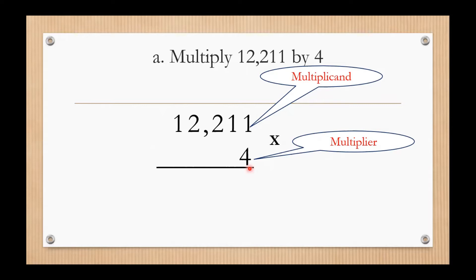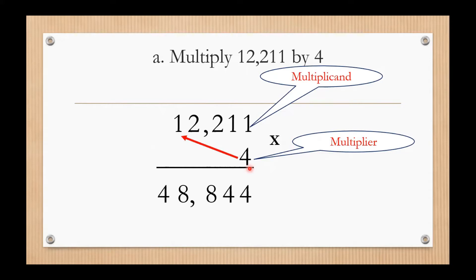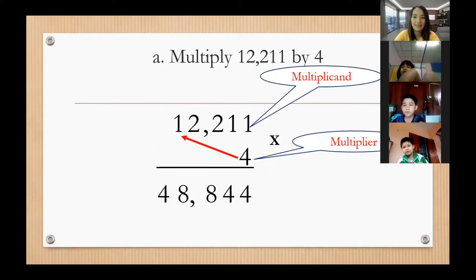Let's start with 4 times 1. What's the answer? 4. Very good. Next, 4 times 1 equals? 4. Very good. Next, 4 times 2? 8. And 4 times 2 again? 8. Very good. Last one, 4 times 1? 4. Very good. So how do you read the product of the multiplication? 48,844. Very good.